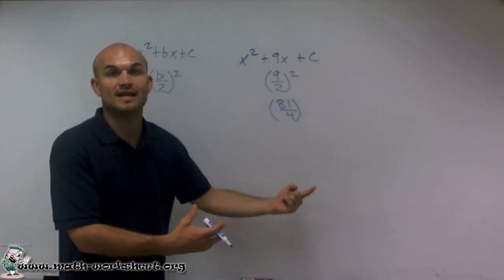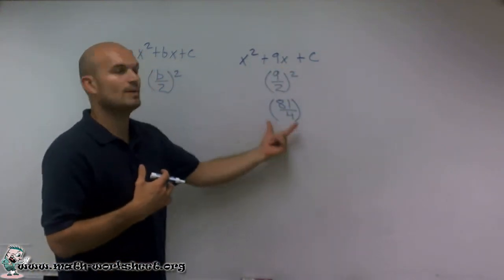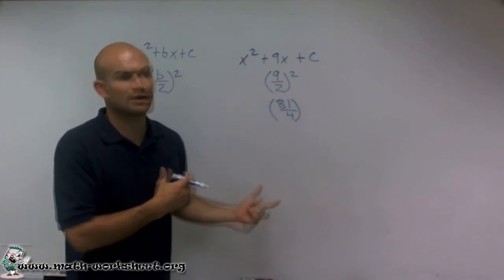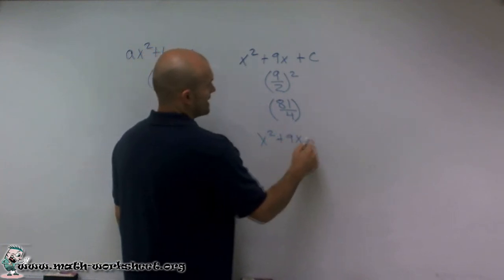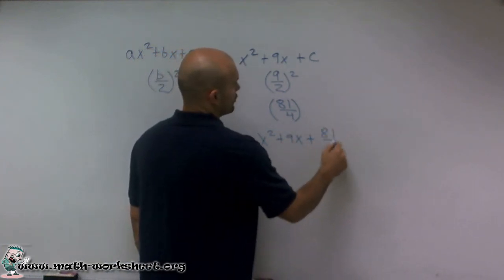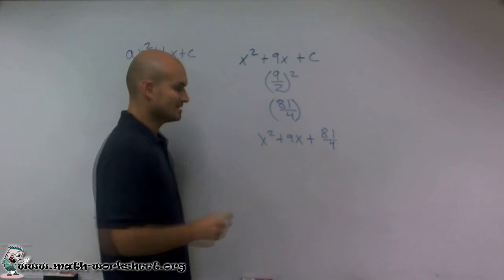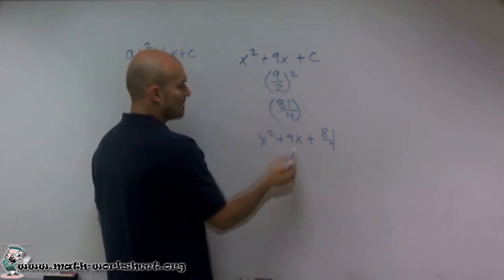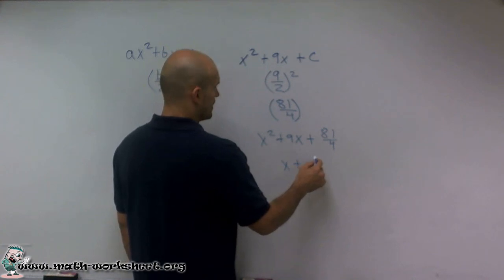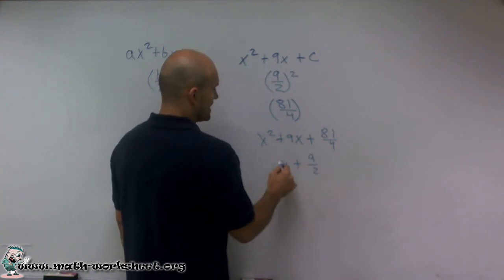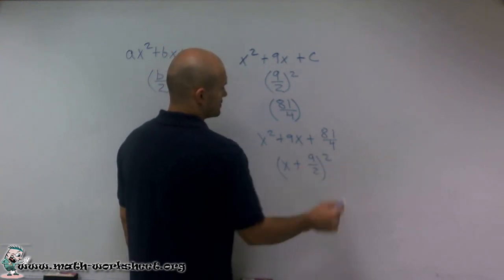That's now in the next step of completing the square, going to help you create that perfect square trinomial. In this case, you now have x squared plus 9x plus 81 over 4. You can now rewrite this as a perfect square binomial as x plus 9 halves squared.